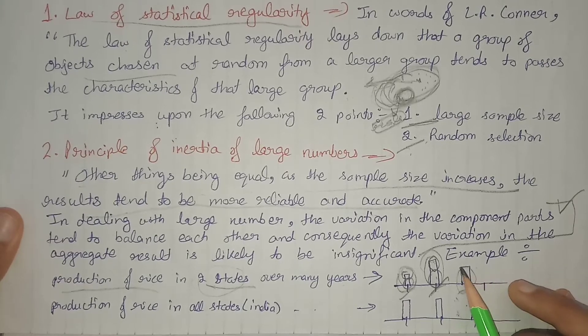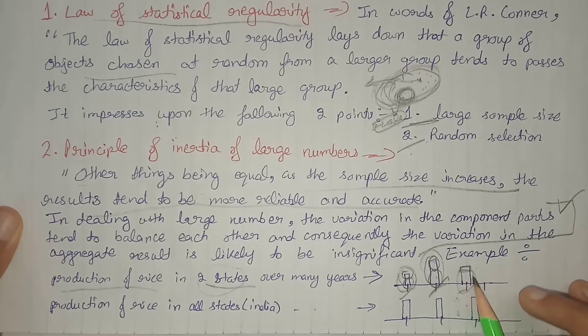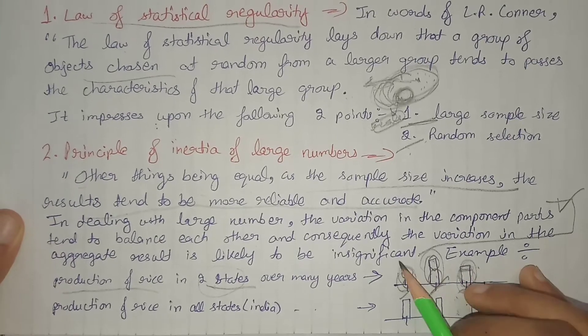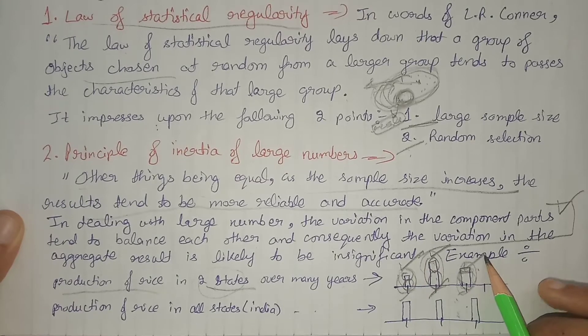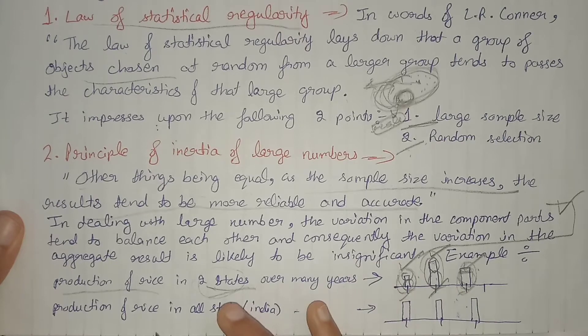In the third year, assume production in one state decreased while production in the second state increased significantly. So overall we are seeing variations when we take a sample of only two states.